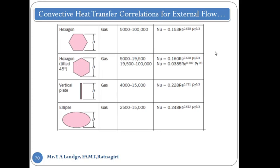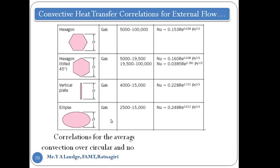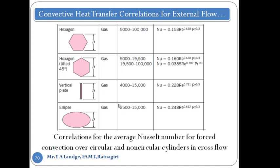There are a number of correlations depending on what geometry is used, and accordingly the correlations change. But everywhere there is a Nusselt number, Reynolds number, and Prandtl number — only the constants and the powers on Reynolds number change.